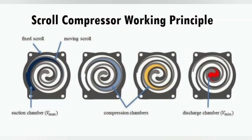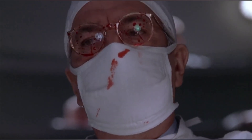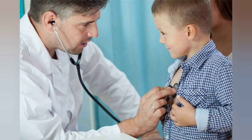As for modern uses, the Archimedean spiral has a number of real-world applications today. Scroll compressors, which are used for compressing gases, have rotors that can be made from two interleaved Archimedean spirals. These spirals are the same size and almost resemble Archimedean spirals.